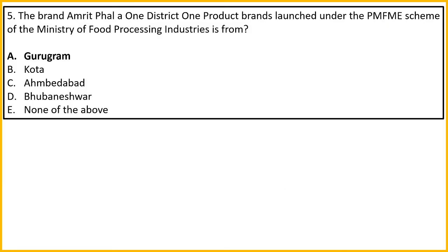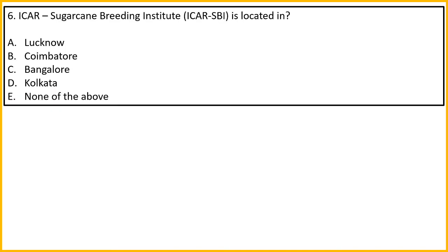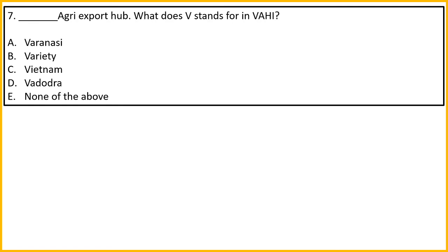We will discuss the PMFME scheme in detail. ICAR Sugarcane Breeding Institute - its location was discussed. The ICAR Sugarcane Breeding Institute is located in Coimbatore. The question here regarding Varanasi is about the Varanasi Agriculture Export Hub (VAEH). The right answer for that question is Varanasi.